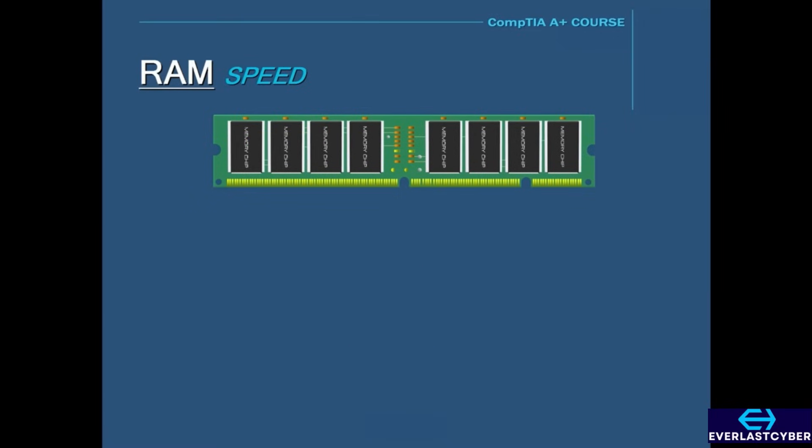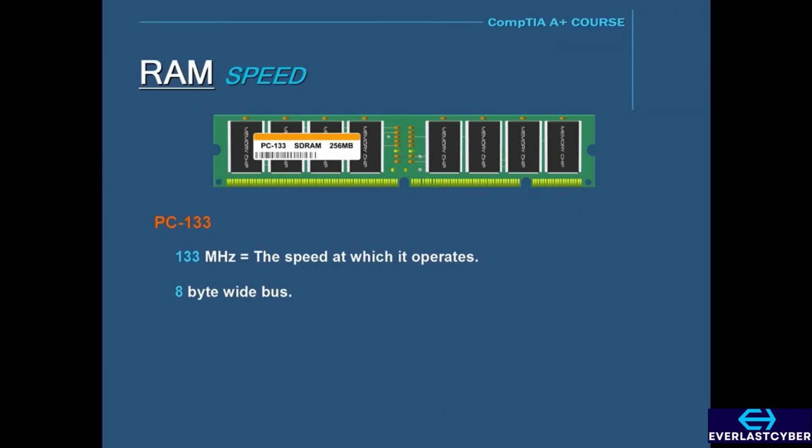For an SDRAM module labeled PC133, you multiply 133 times 8 bytes, which equals 1066, and the total bandwidth for PC133 equals 1066 MB per second.